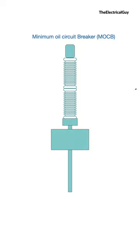There is another type of circuit breaker called the minimum oil circuit breaker, which you can see on your screen. In this type, the current interruption takes place in the interrupter which is filled with insulating oil.